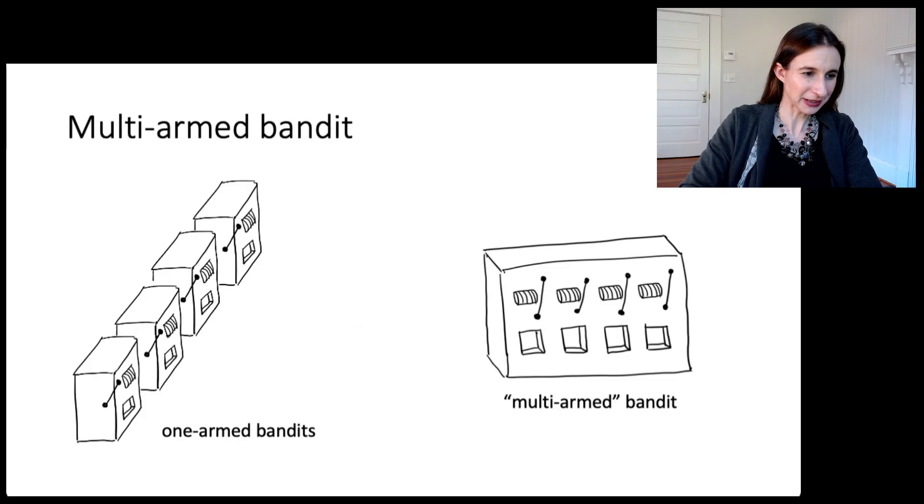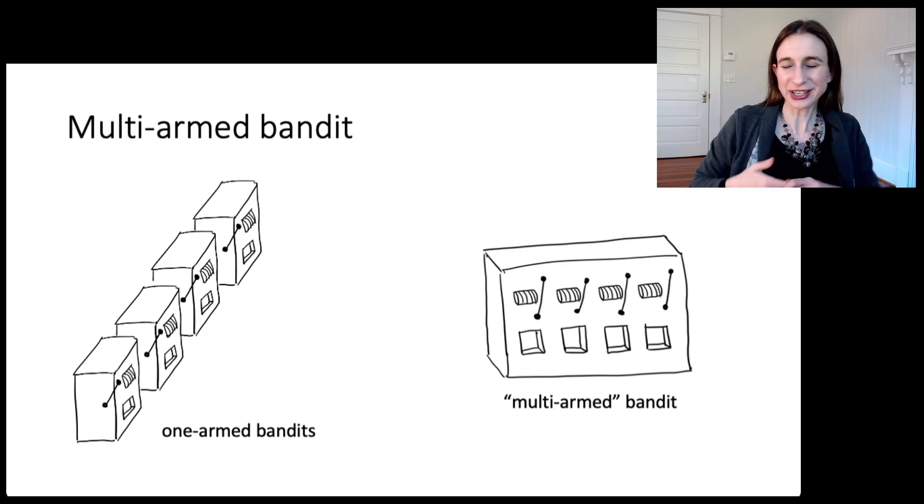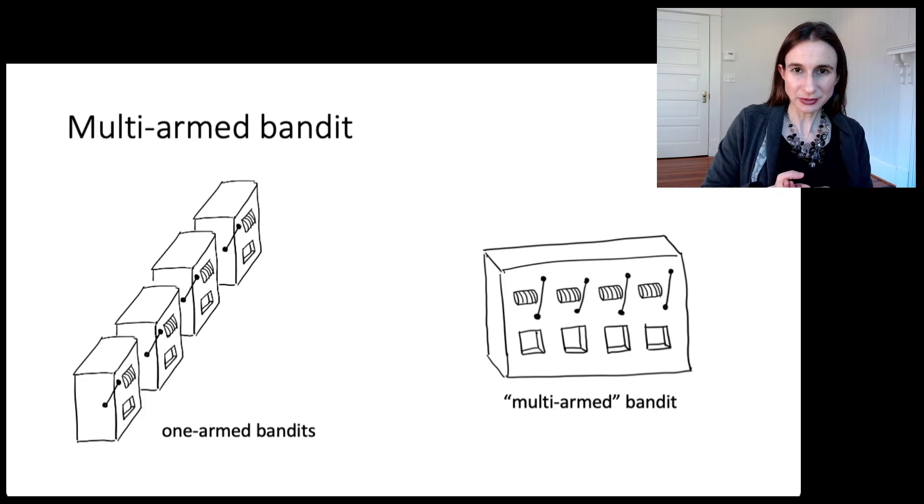I want to teach you some basics of multi-armed bandits. Multi-armed bandits are a type of algorithm named after gambling machines. Let's say you walk into a casino and see a row of one-armed bandits. These are machines that have an arm, you pull the arm, and with some probability it gives you a reward.